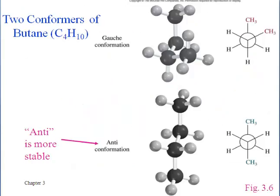You need to know the distinction between staggered and eclipsed, and here are some other important terms. If we go from ethane to butane, we now have four carbons, and if we're looking down the second and third carbon, we find there's another aspect to conformational analysis. Both of the conformations shown on this slide are staggered, so they're good in that respect, but they're not equivalent to each other.